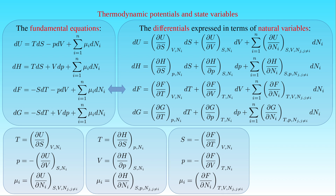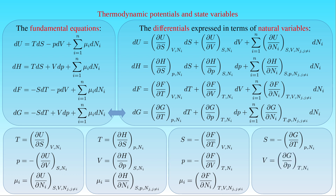The last group of expressions comes from the comparison of the two equations in the fourth line. The first expression states that the entropy S is equal to minus the partial derivative of the free enthalpy G with respect to the temperature T at constant P and Nᵢ. The second states that the volume V is given by the partial derivative of G with respect to P at constant T and Nᵢ. The third states that the chemical potential μᵢ is equal to the partial derivative of G with respect to Nᵢ at constant T, P, and Nⱼ where j ≠ i.